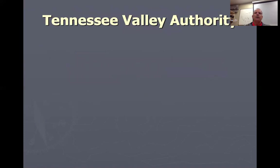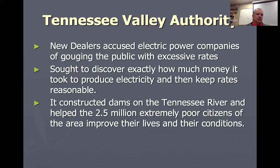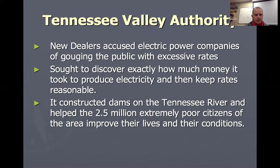The Tennessee Valley Authority is probably all of the above — relief, recovery, and reform — and it's still around today. The TVA wanted to provide jobs through the hard work of building dams, which in turn provided electricity. Roosevelt's administration noted it was a shame that electricity was so expensive for people in poor areas like Appalachia — along the Appalachian Mountains in Tennessee, North Carolina, and Virginia. Most of those people didn't have electricity because it was too expensive, so the government said it would provide electricity to Appalachia.